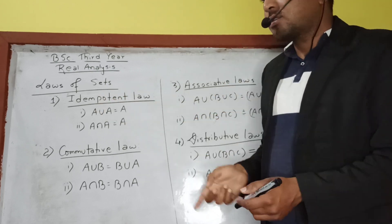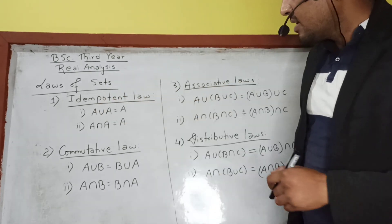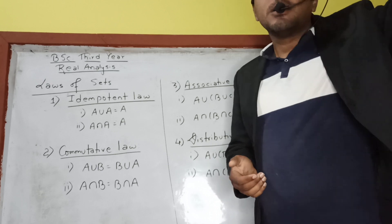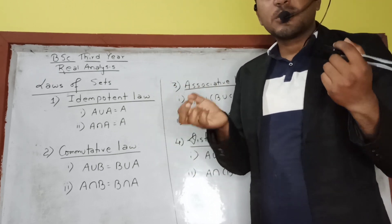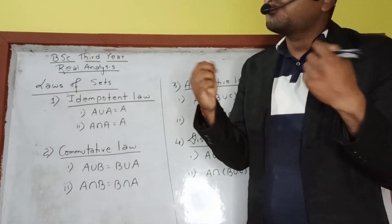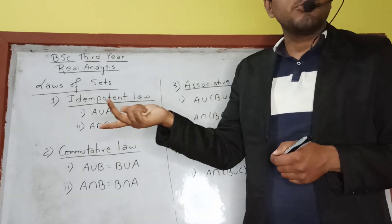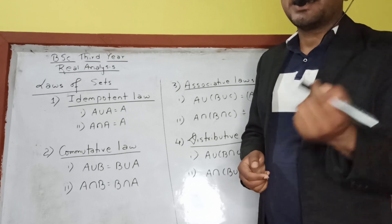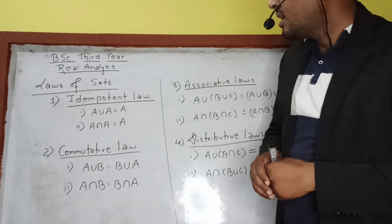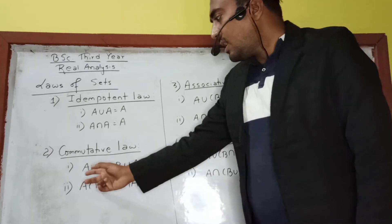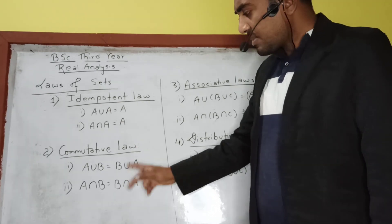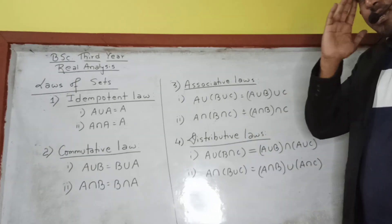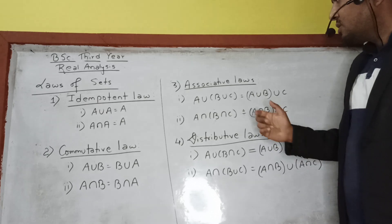Commutative law: just like in real numbers where a + b = b + a and a × b = b × a, for sets we have A ∪ B = B ∪ A and A ∩ B = B ∩ A. This is quite easy. Associative law is similar to real numbers as well: A ∪ (B ∪ C) = (A ∪ B) ∪ C.